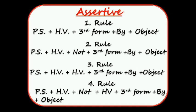Assertive rules: Rule 1 — PS plus HV plus third form plus BY plus object. Rule 2 — PS plus HV plus NOT plus third form plus BY plus object. Rule 3 — PS plus HV plus HV plus third form plus BY plus object. Rule 4 — PS plus HV plus NOT plus HV plus third form plus BY plus object.